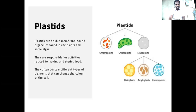Plastids are double-membrane-bound organelles found in plants and some algae. They are responsible for activities related to making and storing food. They often contain different types of pigment that can change the color of the cell.